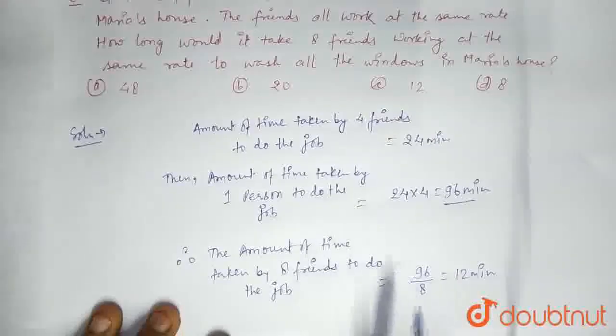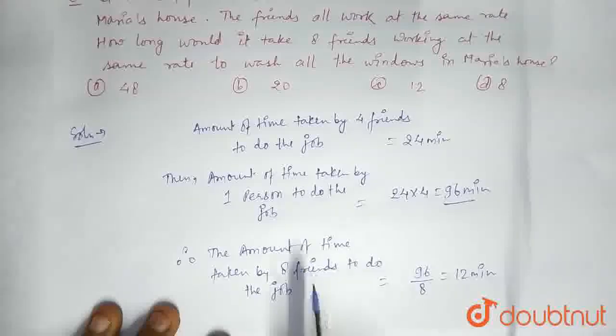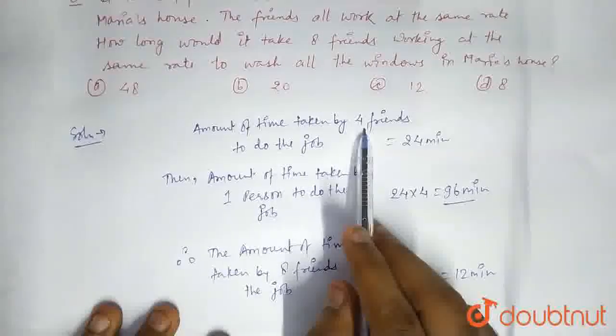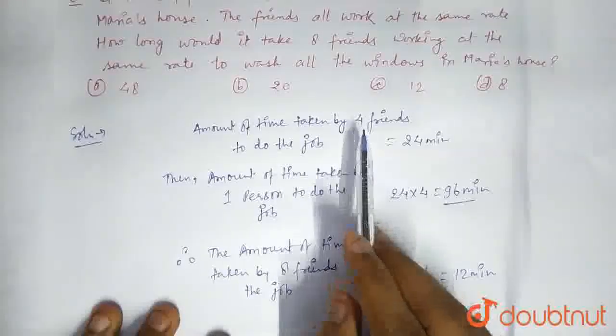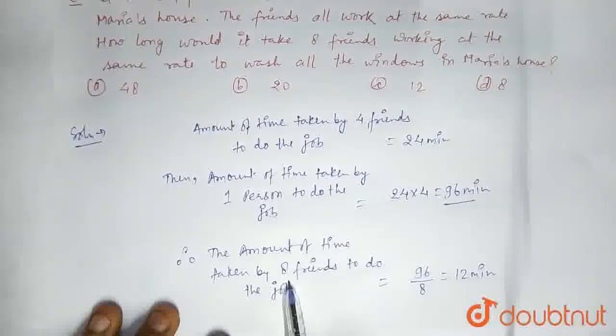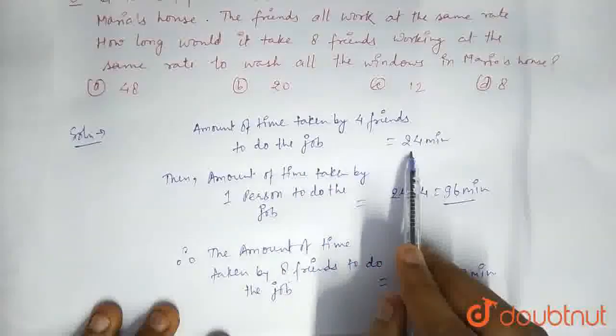And one thing more: the workforce in the third situation where 8 friends are working is bigger than the first situation where 4 friends are working. That means the amount of time that these 8 friends are taking must be lower than, must be lesser than the amount of time in the first scenario, that is 24 minutes.